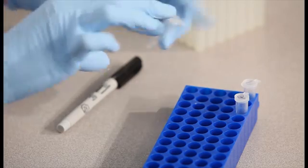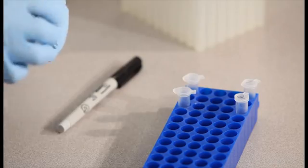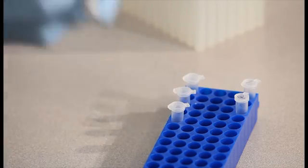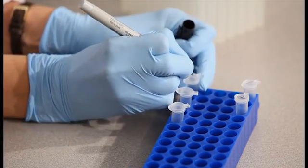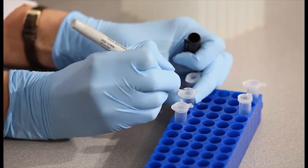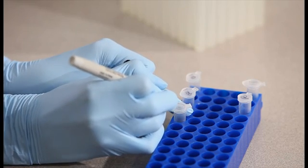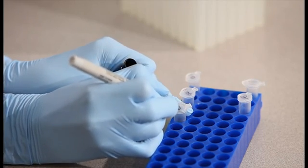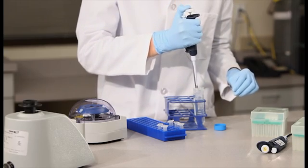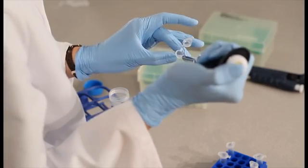The next step is to prepare a qPCR standard curve to measure the efficiency of the qPCR reaction. Prepare to make the 4-point qPCR standard curve by labeling 3 fresh microtubes 1 to 10, 1 to 100, and 1 to 1000. Then, add 90 microliters of nuclease-free molecular biology grade water to each tube.